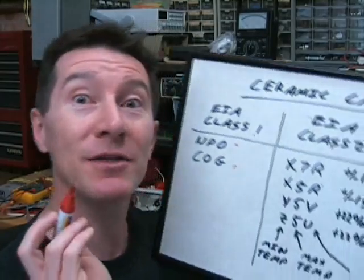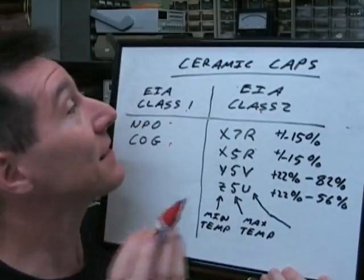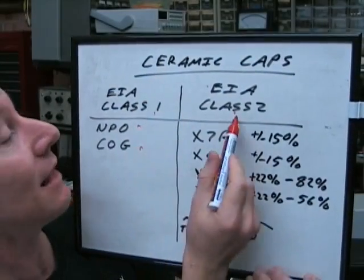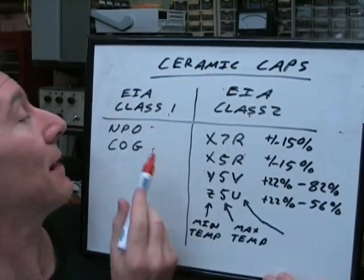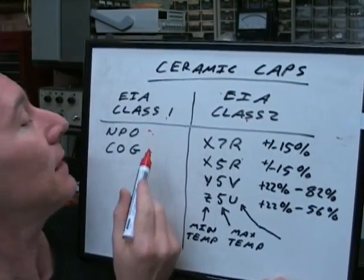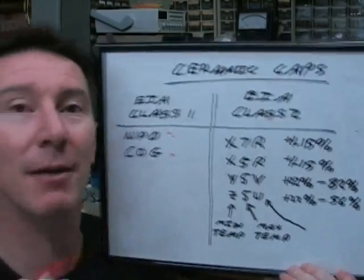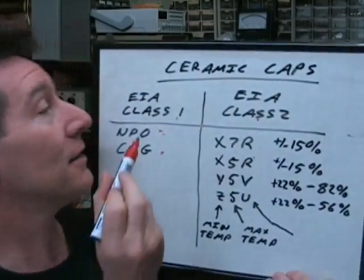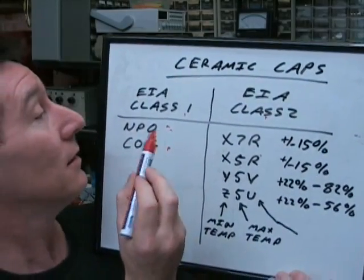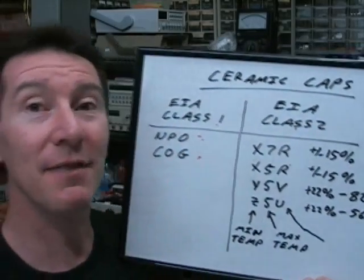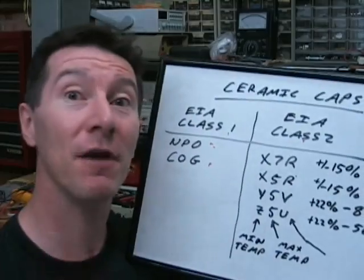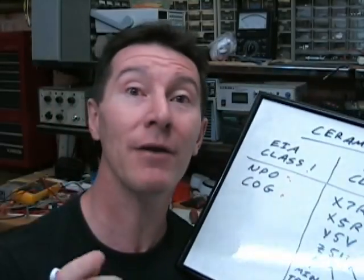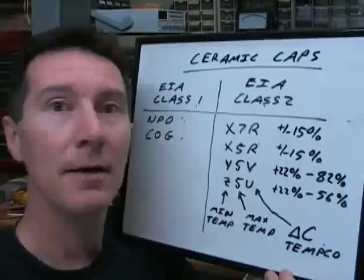When you're talking about ceramic capacitors, there are two basic classes defined by the EIA: Class 1 and Class 2. Class 1 ceramic capacitors are the NPO and COG types — they do come in other types, but those are the two main ones. The advantage of Class 1 ceramic caps is that they do not change with temperature; they're very, very stable. But they only come in low values — that's their major disadvantage.